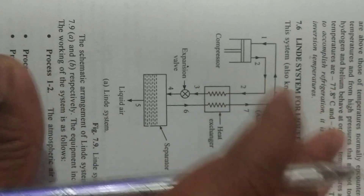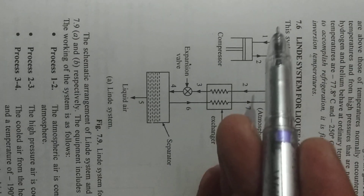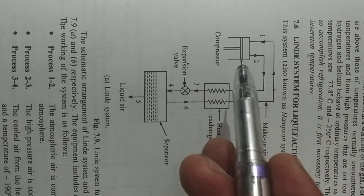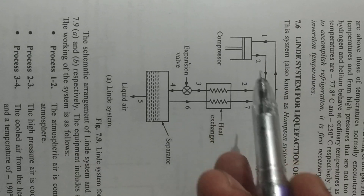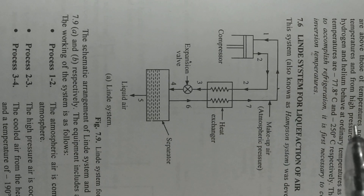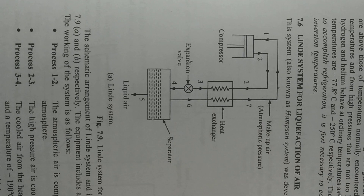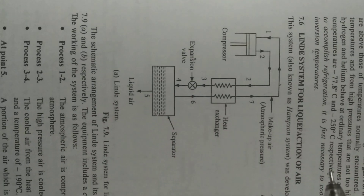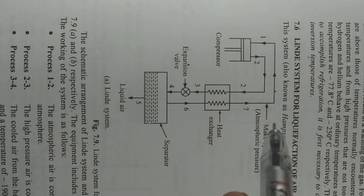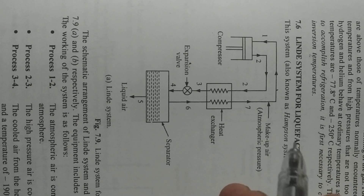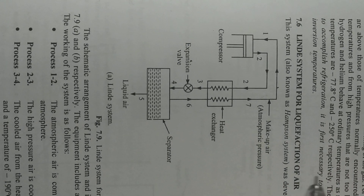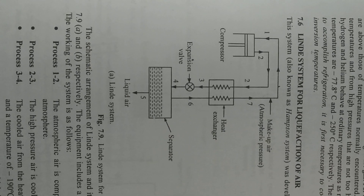First, air is compressed through a compressor. It compresses the atmospheric air to about 100 to 200 atmospheres. Then this high pressure air is cooled to about minus 106.7 degrees Celsius.